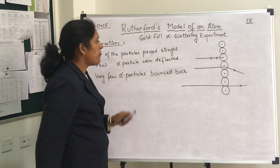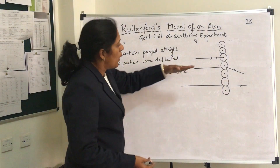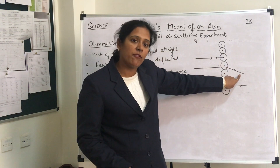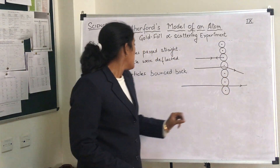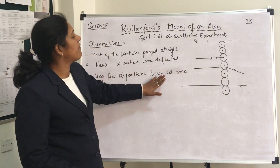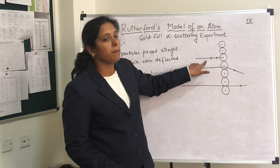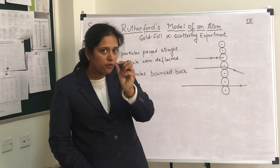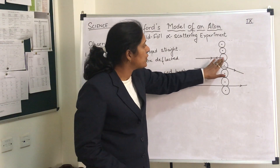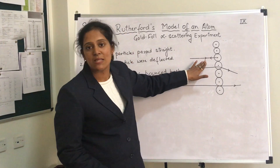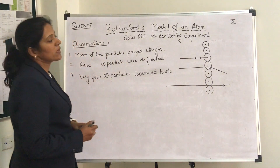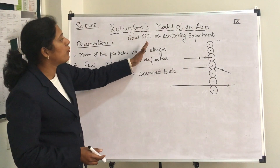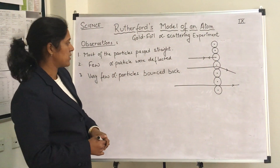Few alpha particles got deflected — when they passed through the gold foil, a few alpha particles got deflected from their path. And very few alpha particles bounced back; they retraced their path. These were the three major observations made by Rutherford in the gold foil alpha scattering experiment.